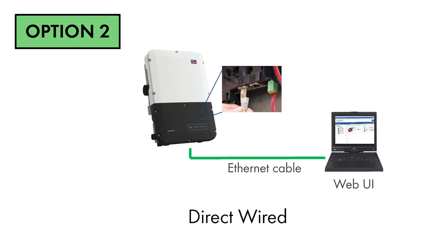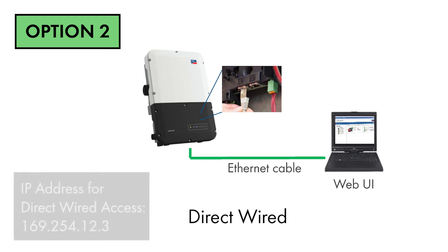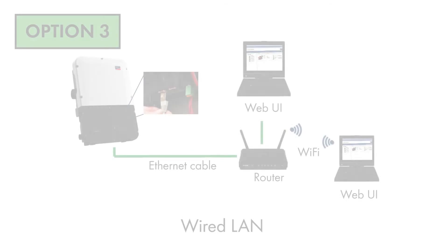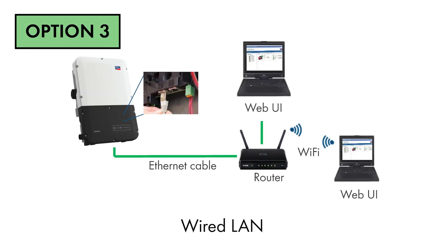For a direct wired connection, the device running the web browser is connected directly via Ethernet cable to either of the inverter's communication board RJ45 jacks. The IP address used to access the user interface is 169.254.12.3.